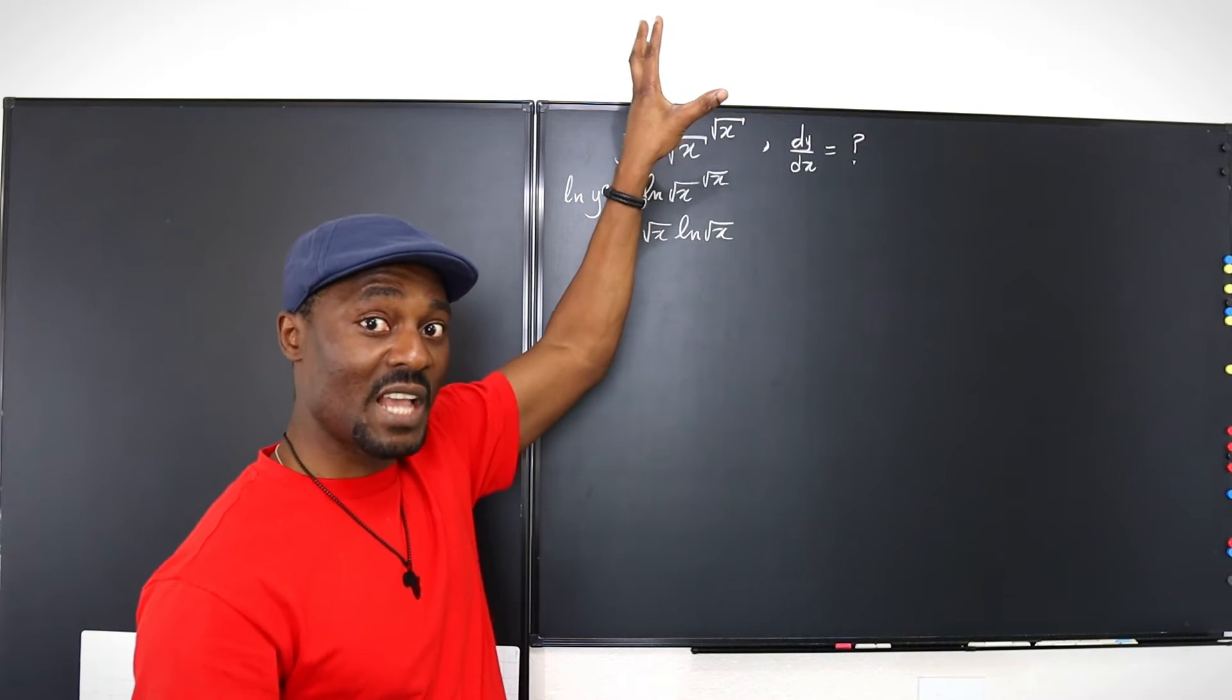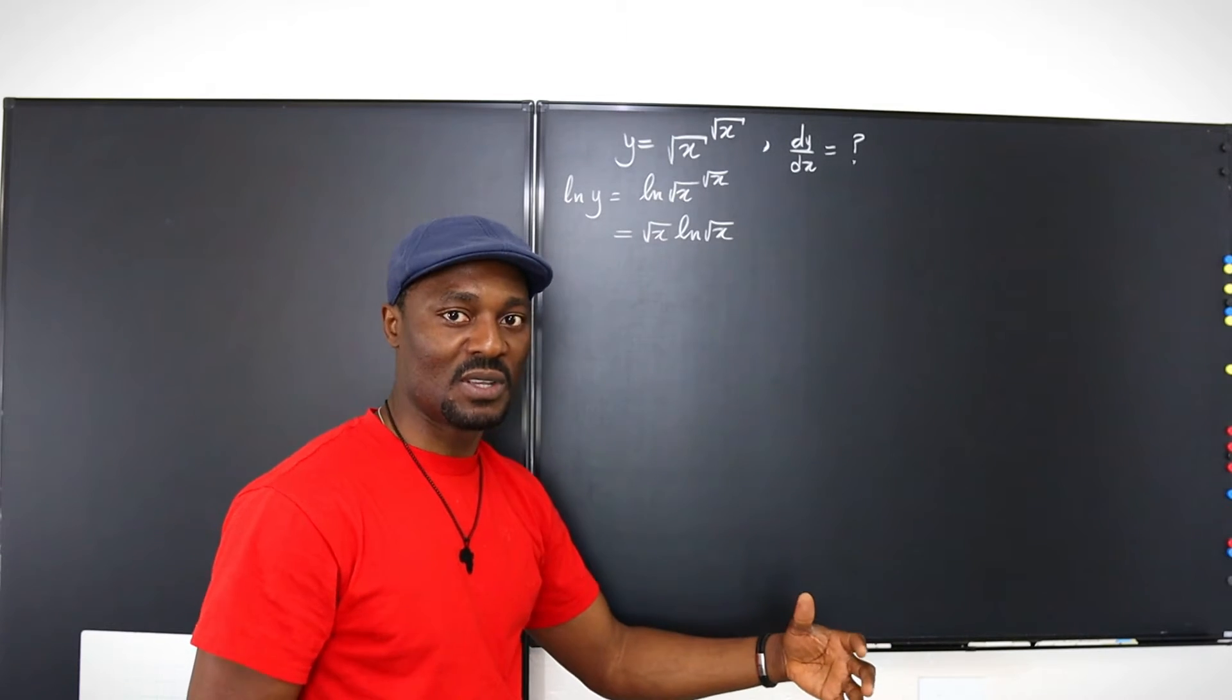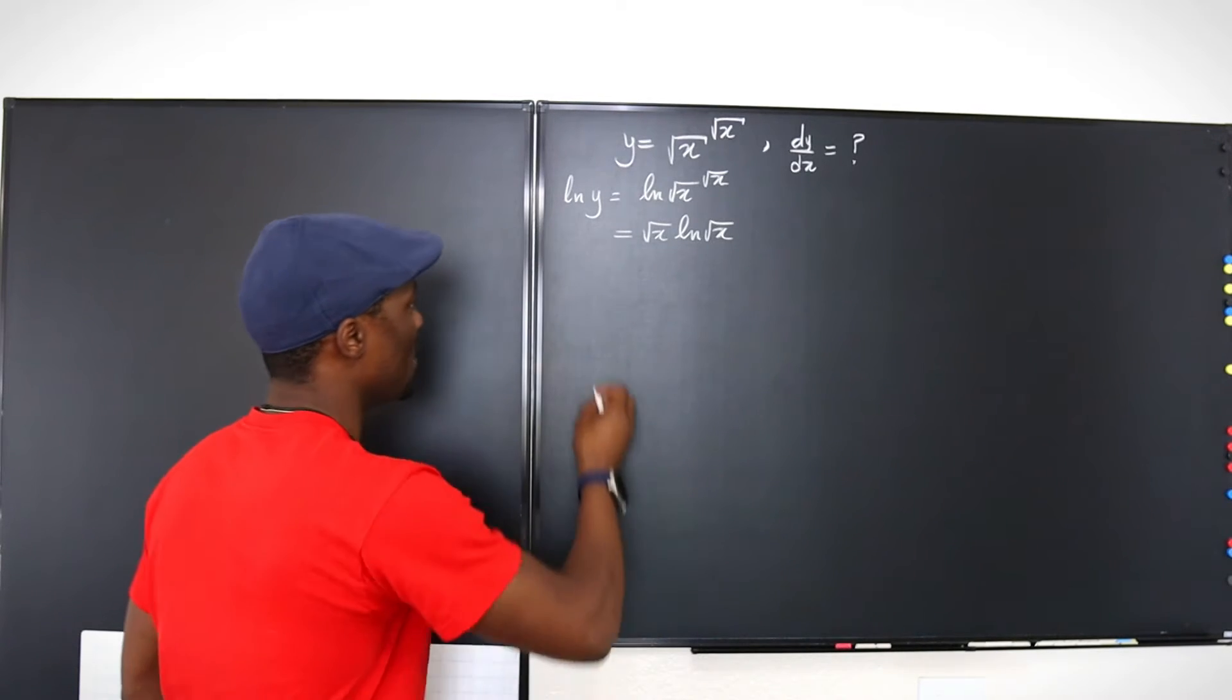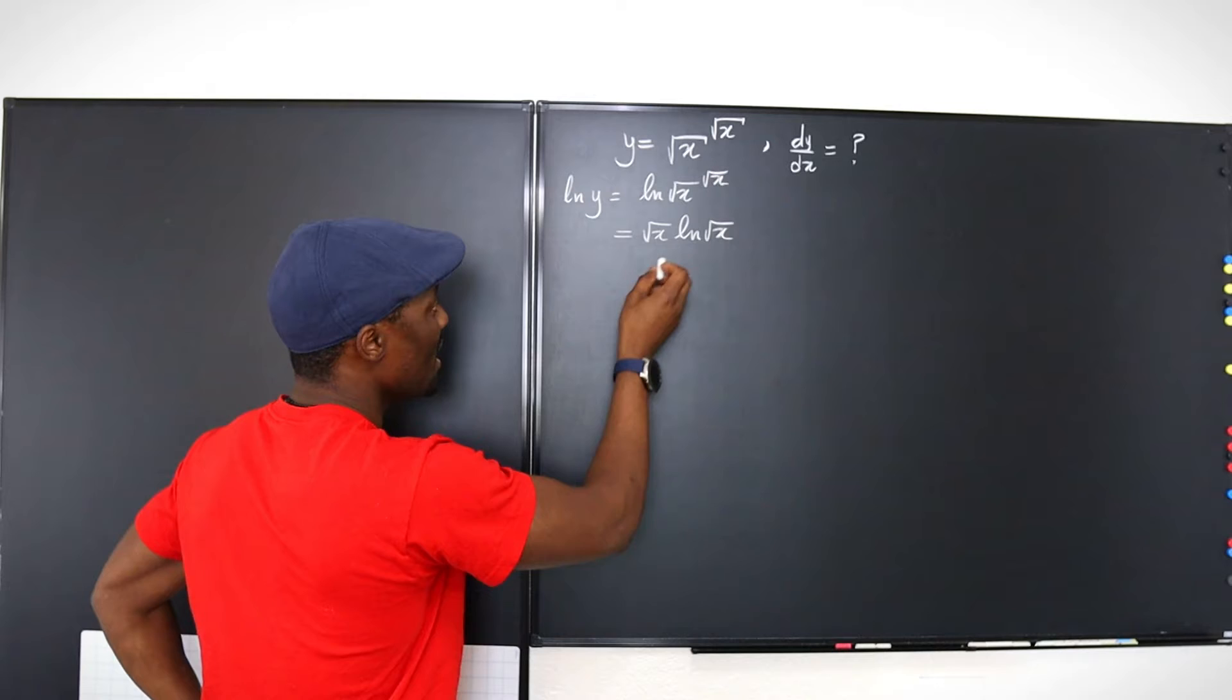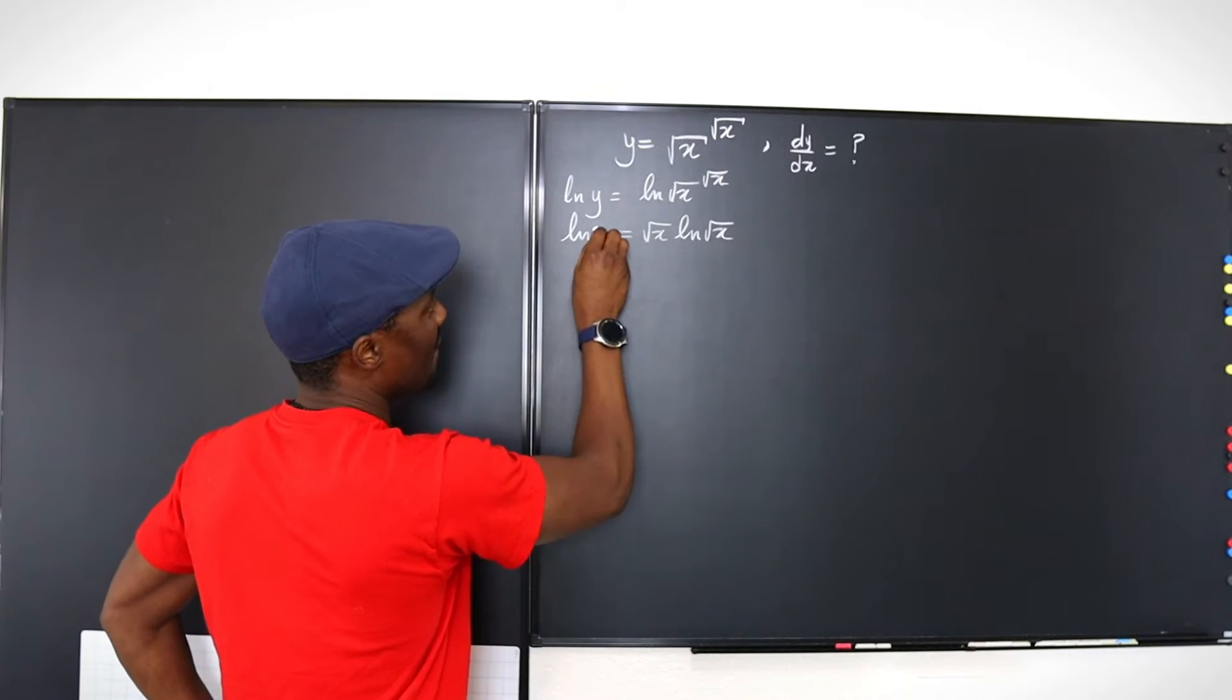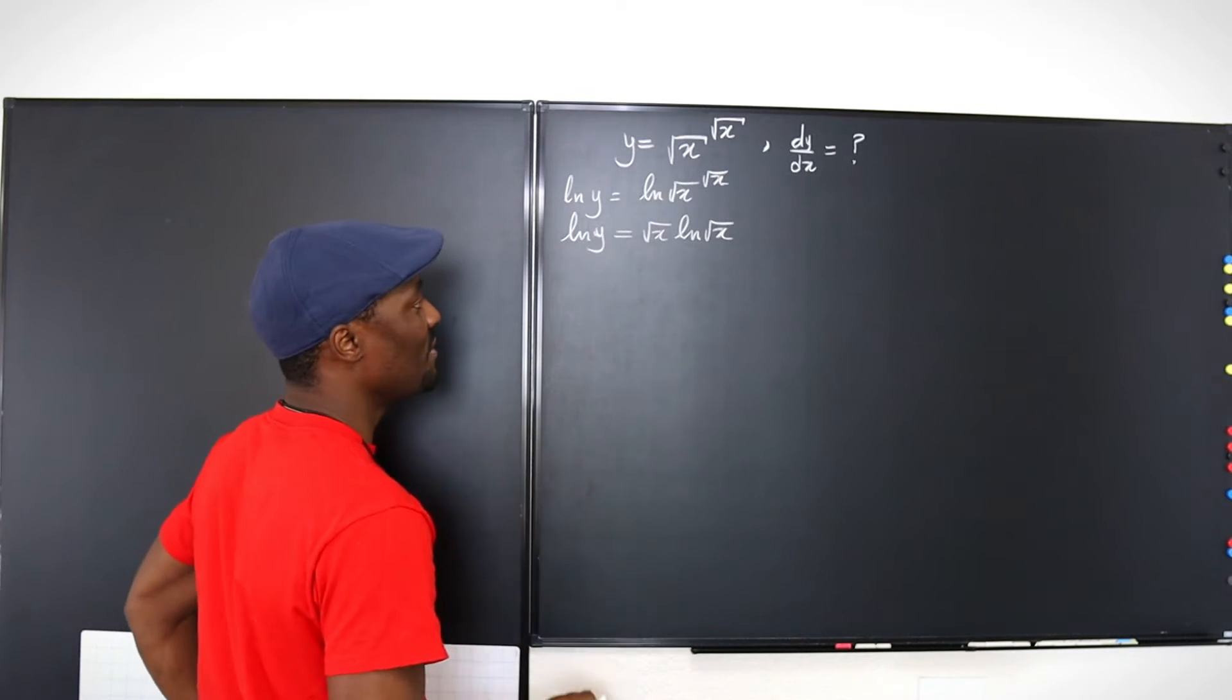Once the function is the exponent, you don't know the rule. You want to make sure it becomes a product. So let's go here. You have this, that's ln(y). So we can take the derivative of both sides and we'll be fine.